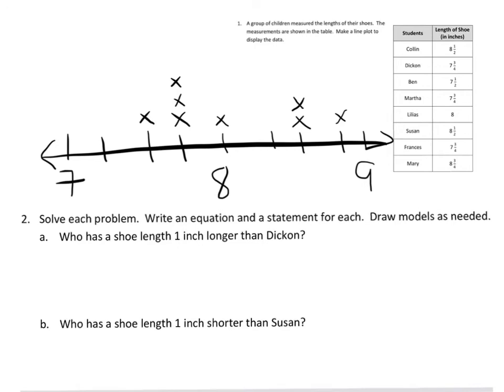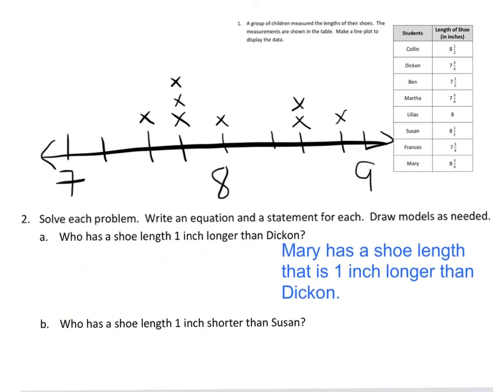So what does the line plot tell you? So I've redrawn mine here, and I want to start with A. Who has a shoe length one inch longer than Dickon? So Dickon had seven and three-fourths, so one inch more would be eight and three-fourths. So that's Mary. Mary has a shoe length that is one inch longer than Dickon. And you place that in there as your answer.